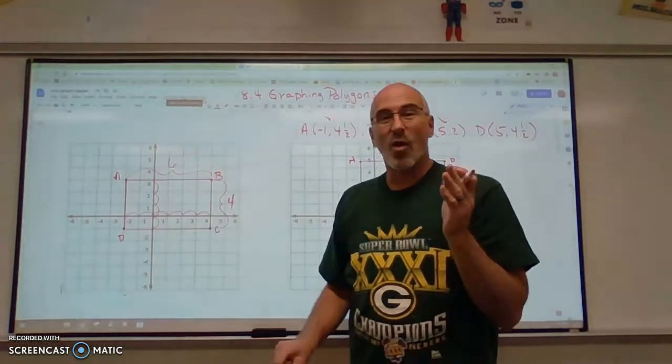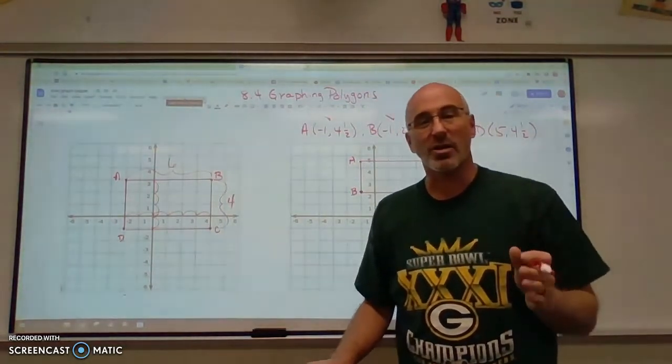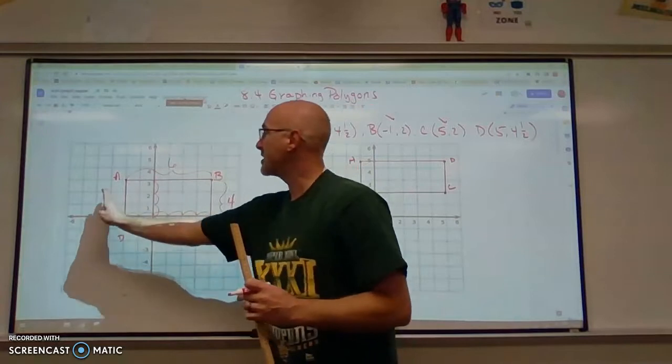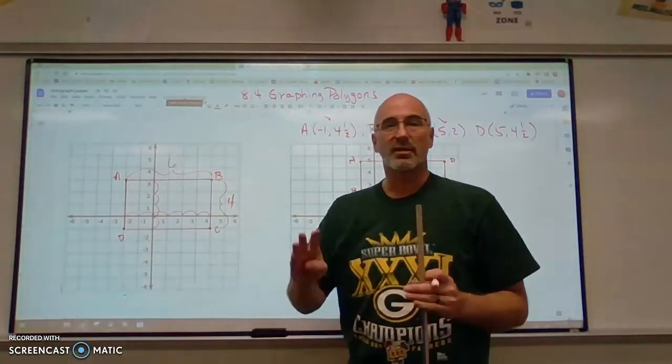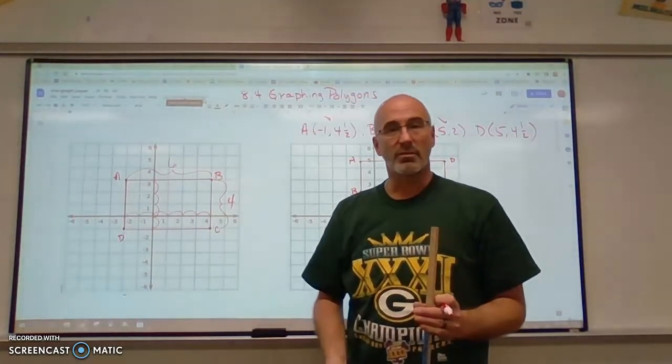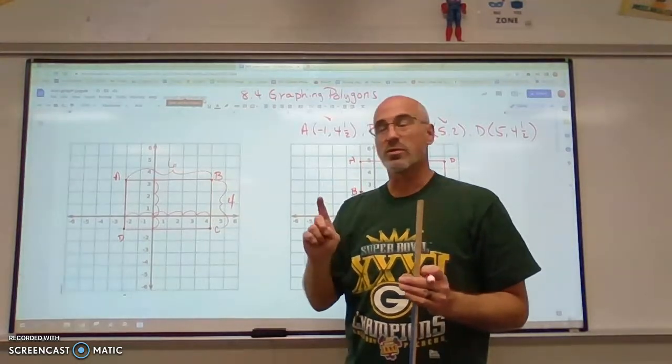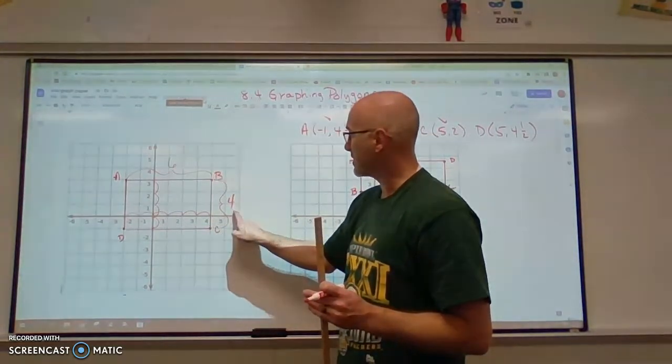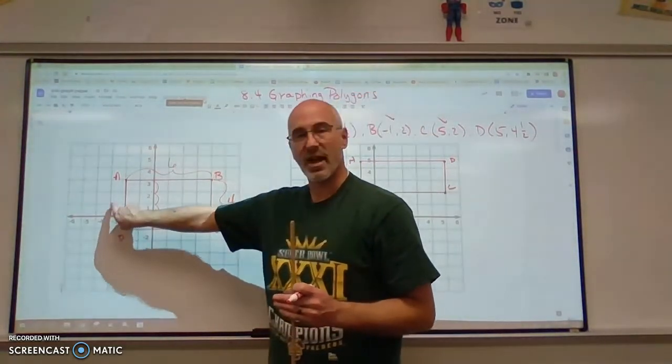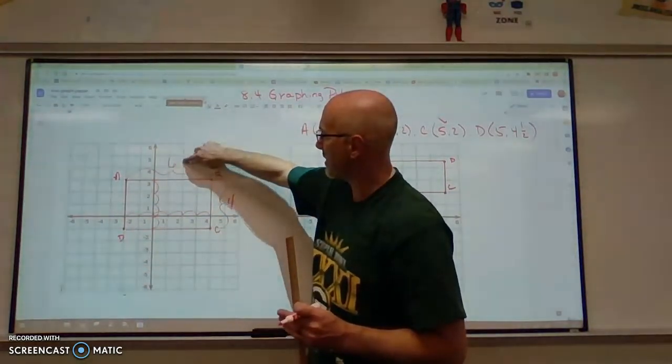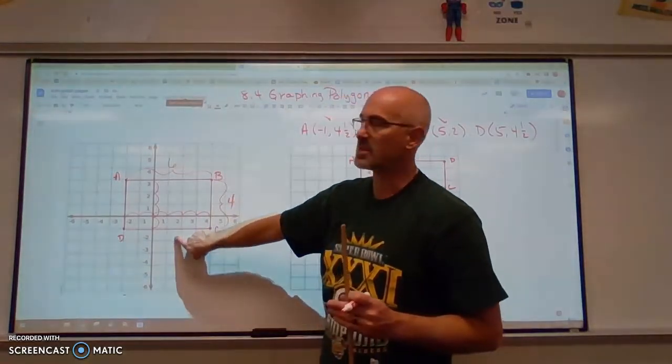So in a rectangle, we learned in our geometry unit that opposite sides are parallel and congruent. So we know that those measures are the same. So if this side is four, this side is going to be four. And if this side is six, this side is going to be six.